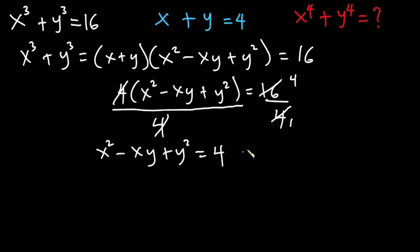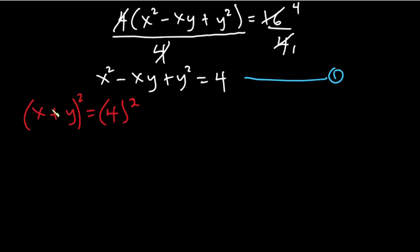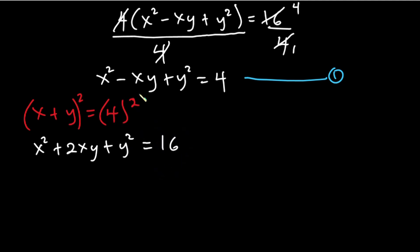I'm going to name this equation as equation 1. Now let's consider x plus y is equal to 4. I'm going to square each side: 4 squared. Expanding, we have x squared plus 2xy plus y squared is equal to 16. I'm going to name this equation as equation 2.